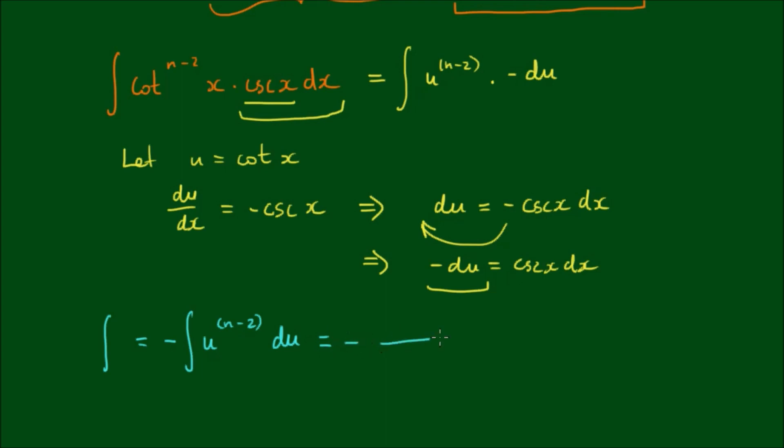The negative stays at the front. We increase the power by 1, so n minus 2 plus 1, which becomes n minus 1, divided by the new power which is n minus 1. And of course we cannot forget the integration constant. And since we made u equals cot x, let's back substitute that. So we have negative cot to the n minus 1 of x divided by n minus 1 plus c.